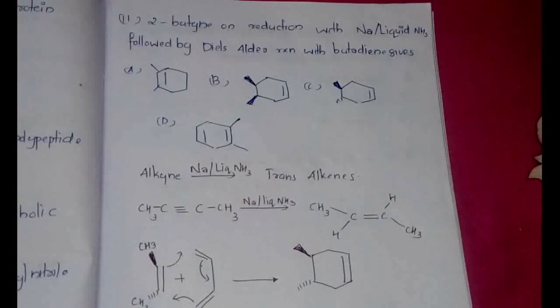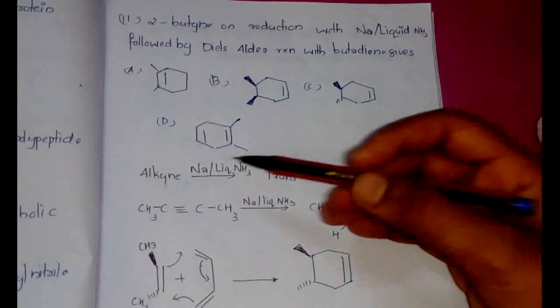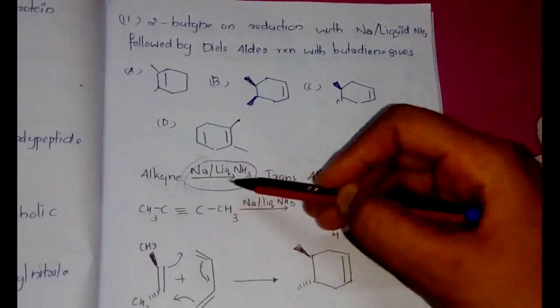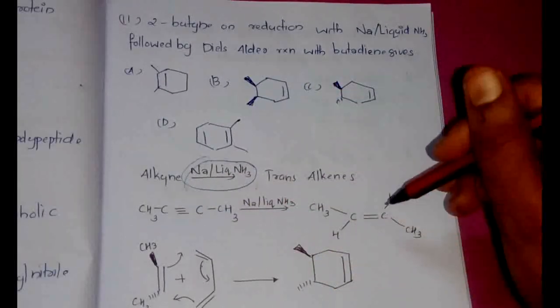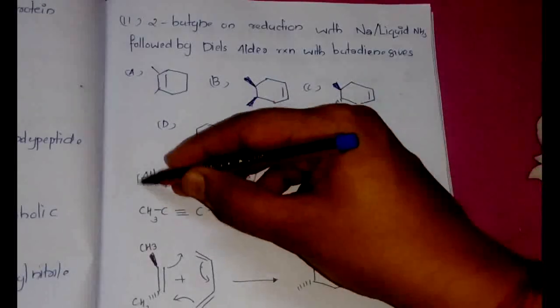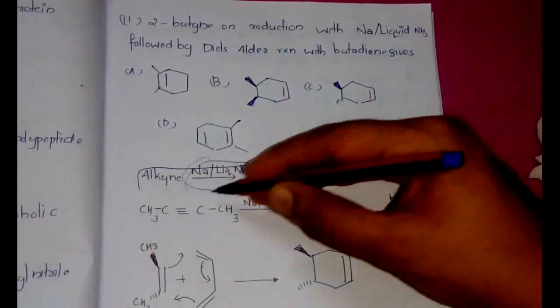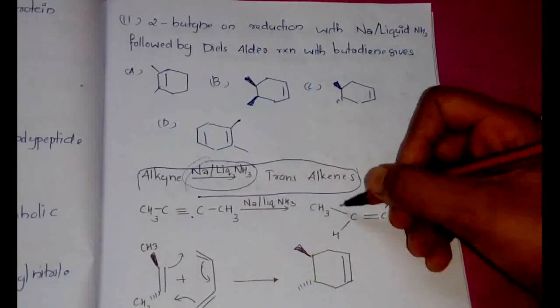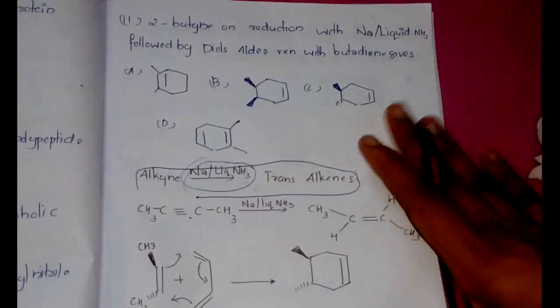Now this particular question here deals with two different concepts. So 2-butyne on reduction with sodium and liquid ammonia followed by Diels-Alder reaction with butadiene gives. So the first thing that you have to remember is: alkyne on reaction with sodium and liquid ammonia gives trans alkenes. This is very important, keep this in mind.